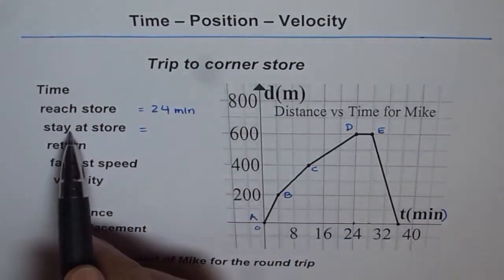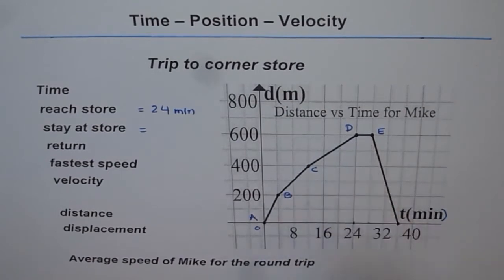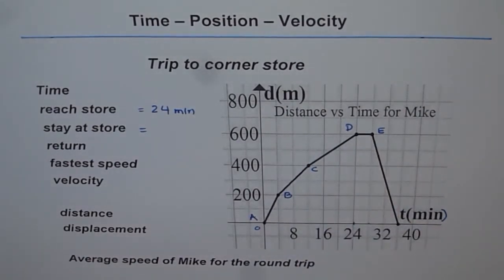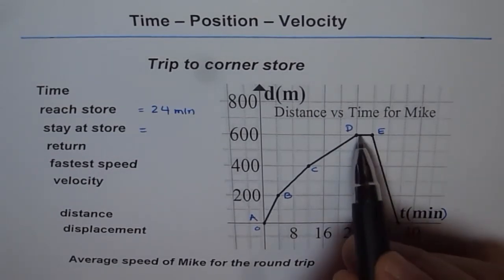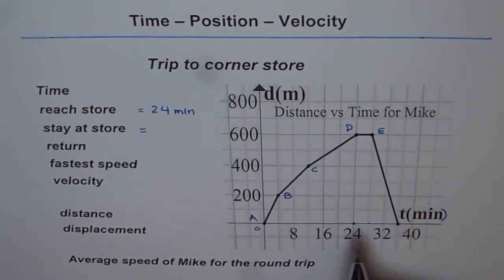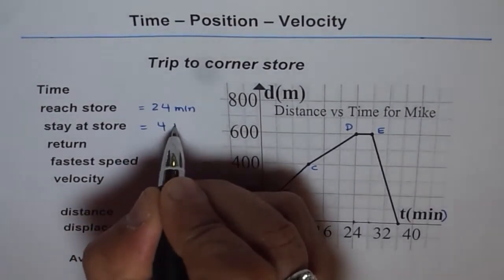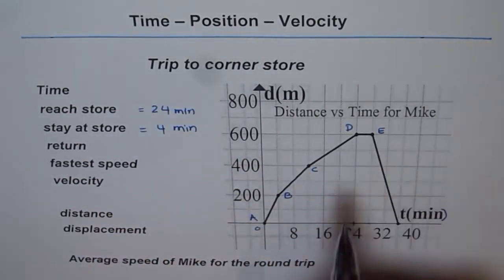How long does he stay at the store? There is no movement. A horizontal line, as you learned, indicates 0 speed, no movement. This is the time he's shopping in the corner store. The time he stays is 4 minutes from 24 to 28. So Mike stays in the store for 4 minutes.